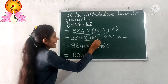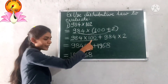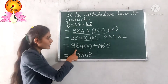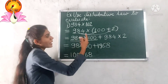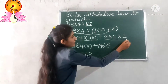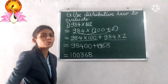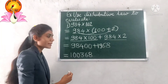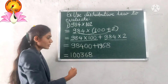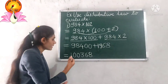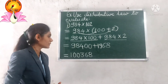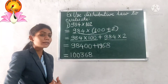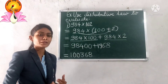After multiplying 984 × 100 we get 98,400. And on multiplying 984 × 2 we get 1,968. After adding them, we get the final answer 100,368. So this is our final answer for this question.